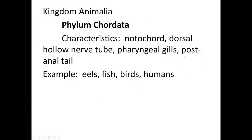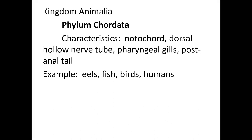Everything else for the remainder of the chapter is in phylum Chordata. This group has four unique features: a notochord (which becomes the vertebral column), a dorsal hollow nerve tube (which becomes the brain and spinal cord — everything before this had a ventral solid nerve tube), pharyngeal gills at some point in life, and a post-anal tail — unique because in all other groups the anus was at the very end of the body, but now there is additional body beyond it.